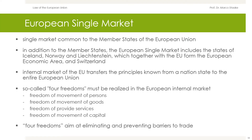The European Single Market is the single market common to the member states of the European Union. In addition to the member states, it includes the states of Iceland, Norway, and Liechtenstein, which together with the EU form the European Economic Area, and Switzerland. The EU internal market transfers the principle known from a nation state to the entire European Union. Therefore, the so-called four freedoms must be realized in the European internal market: freedom of movement of persons, freedom of movement of goods, freedom of movement of services, and freedom of movement of capital — all aimed at eliminating and preventing barriers to trade.